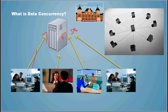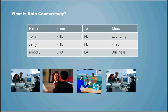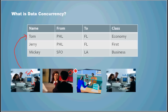Let me give you an example. A passenger named Tom comes to one officer, and she enters data: Tom is traveling from Philadelphia to Florida in economy class. At the same time, another officer is entering data for Jerry, who is traveling from Philadelphia to Florida in first class. Jerry is traveling in first class; Tom is traveling in economy. Poor Tom.